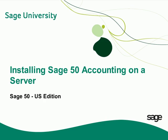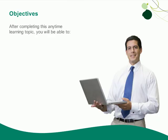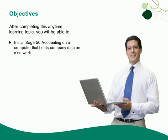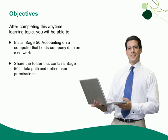Welcome to the Sage 50 U.S. Edition Anytime Learning Topic. This topic provides a walkthrough of installing a multi-user version of Sage 50 Accounting on the computer that will be hosting your Sage 50 company data on a network. After completing this Anytime Learning Topic, you will be able to install Sage 50 Accounting on a computer that hosts your Sage 50 company data, share the folder that contains Sage 50's data path and define user permissions, and activate and register Sage 50 Accounting and check for updates.